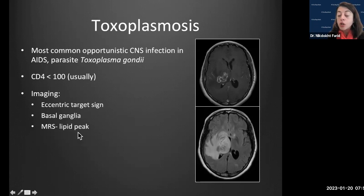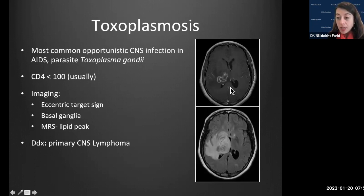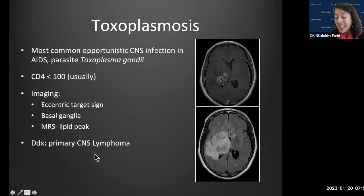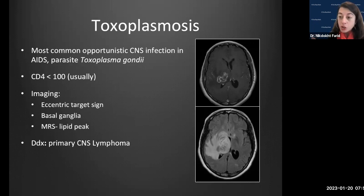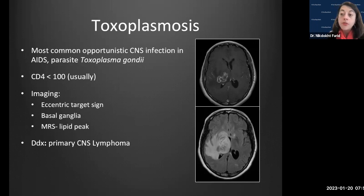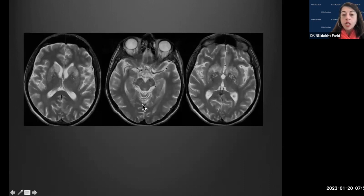Toxoplasmosis usually involves the basal ganglia and thalami. The differential in an HIV patient for a basal ganglia rim-enhancing lesion is lymphoma, creating a diagnostic dilemma. A nuclear medicine thallium scan shows activity with lymphoma but not toxoplasmosis. Often, patients are treated empirically for toxoplasmosis; if imaging and clinical status improve, the diagnosis is confirmed. If not, brain biopsy is considered to confirm lymphoma.